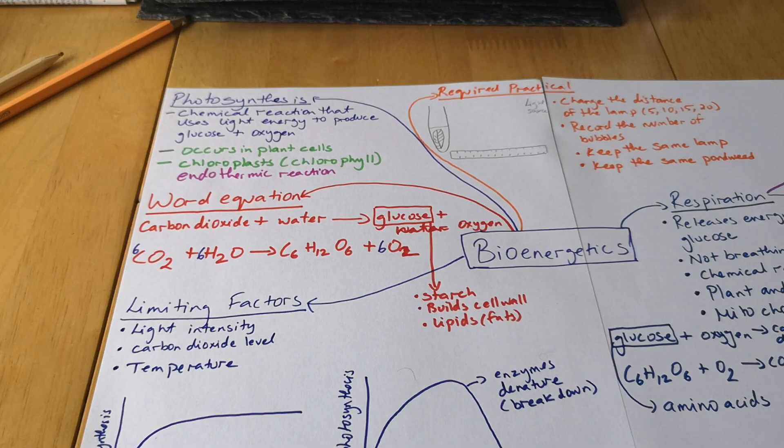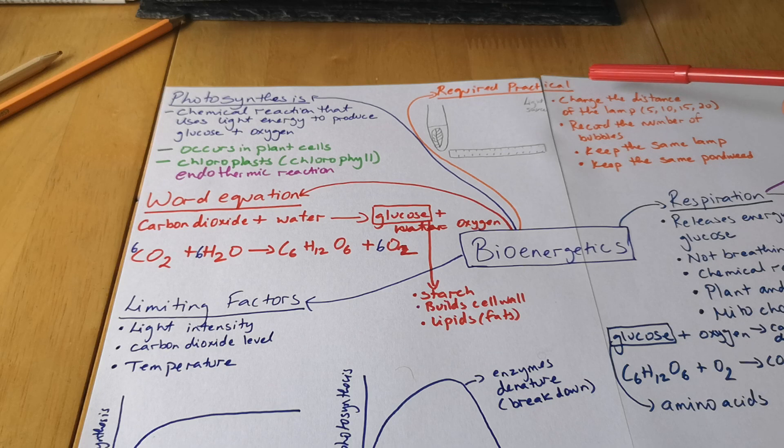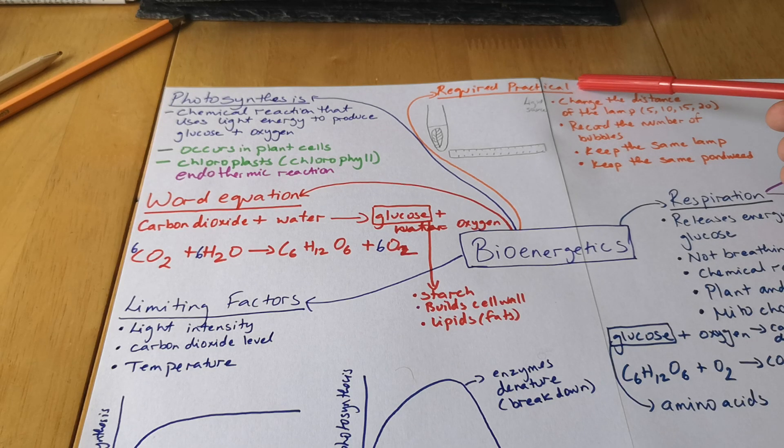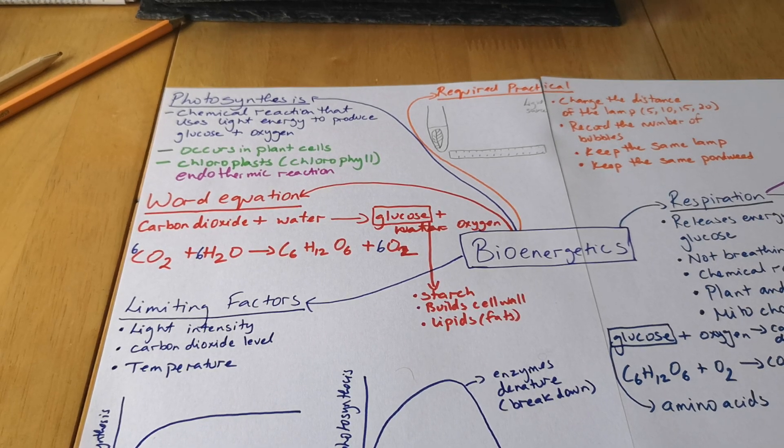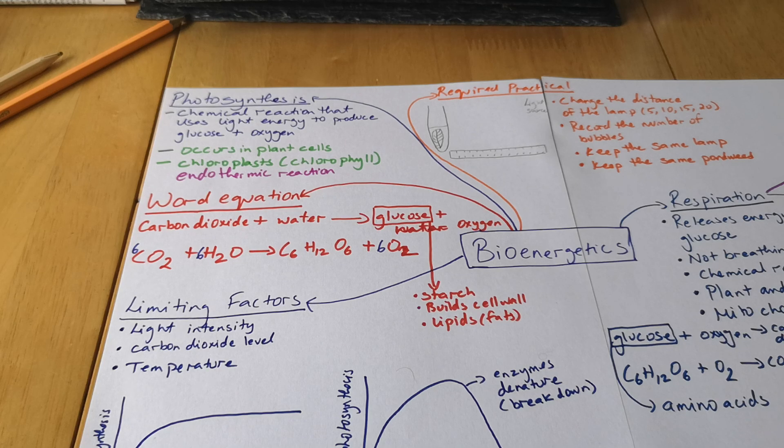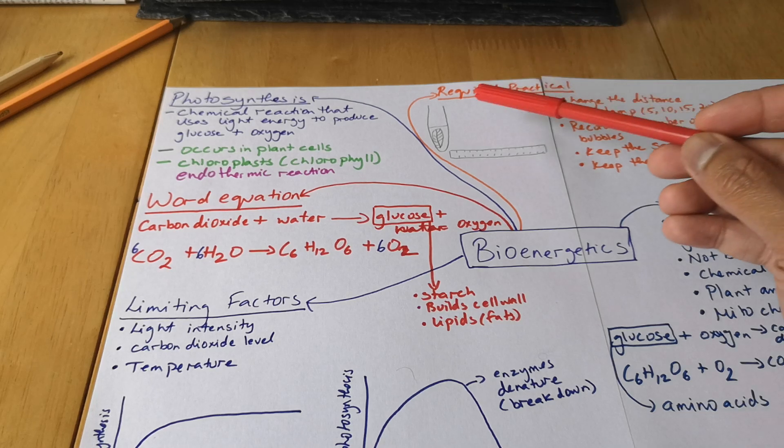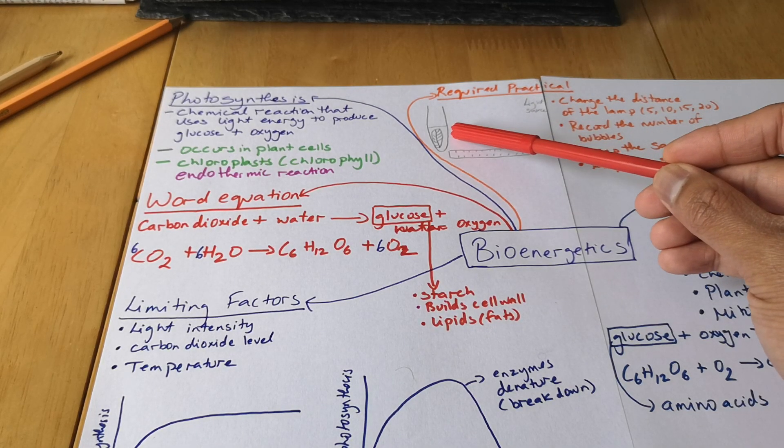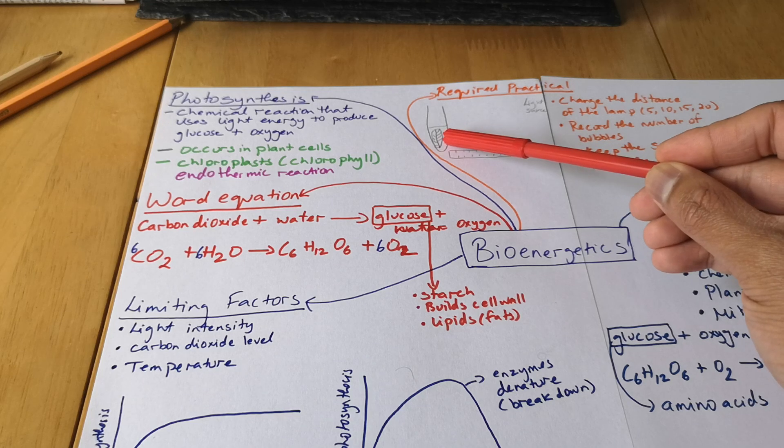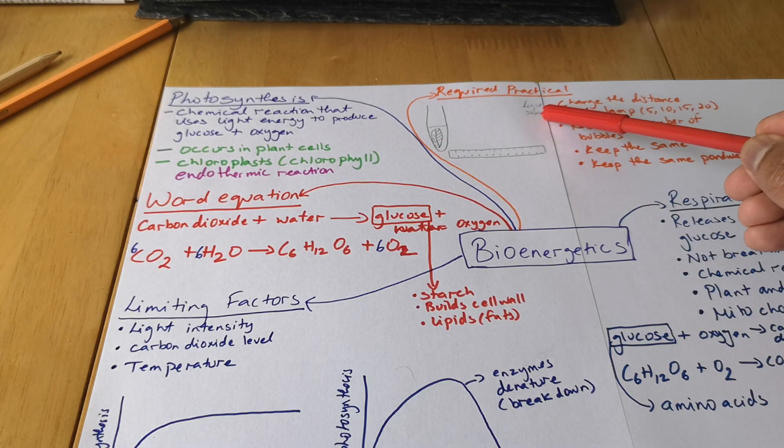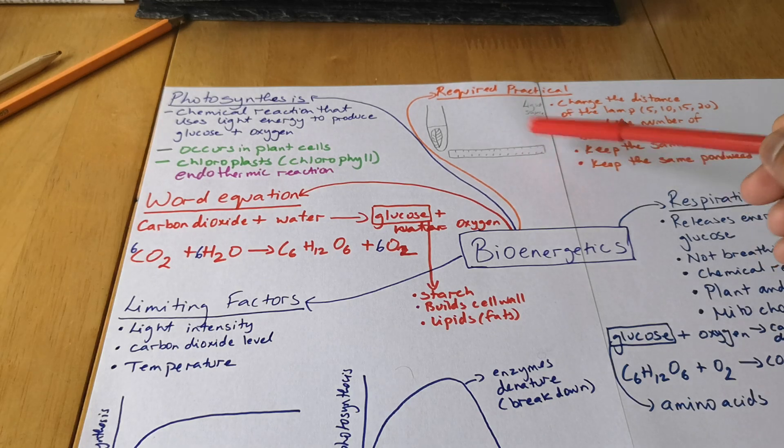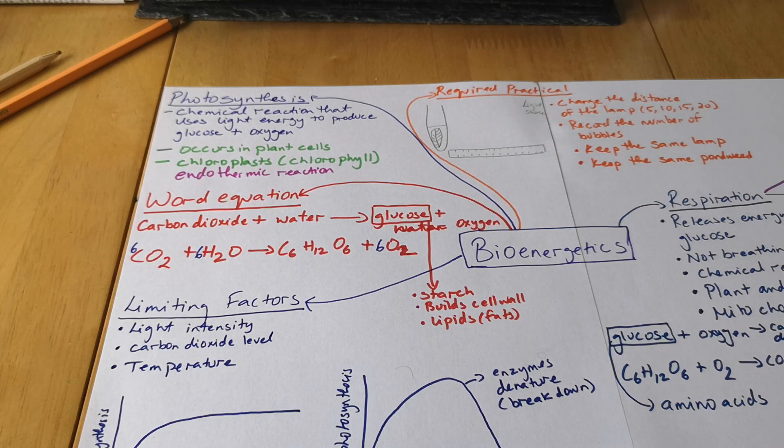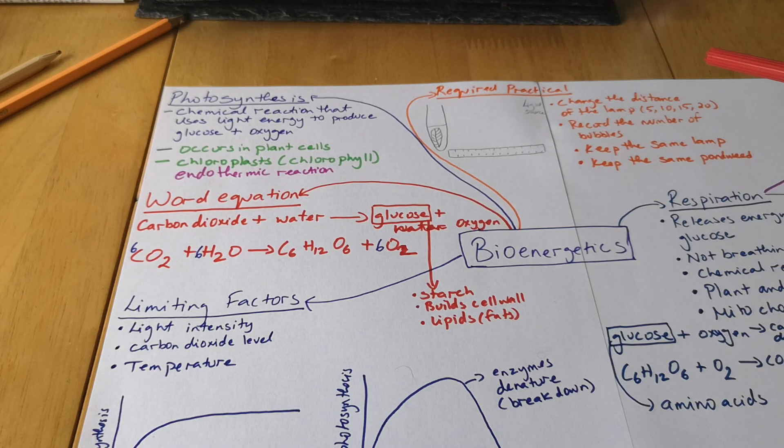Now you would have done this in class, that's a required practical. So what do we do in this required practical? How do we investigate the effect of light intensity on photosynthesis? You must have done this where you either have a boiling tube or a beaker, you've got a pond weed, okay, you'll have a light source like a lamp, you'll have a ruler and a stopwatch as well. So three things.